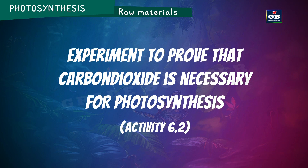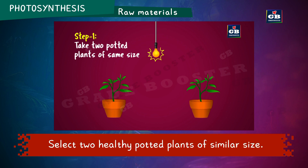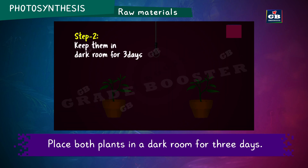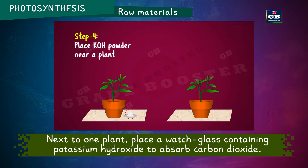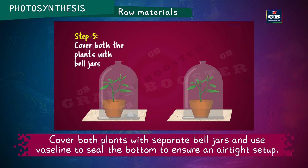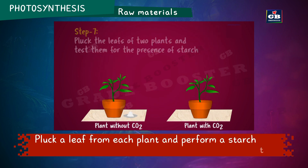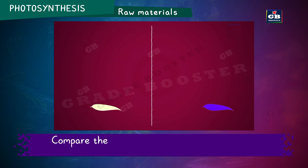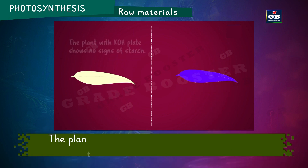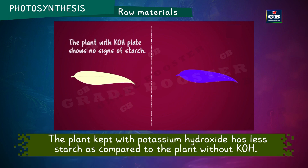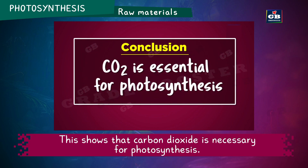Similarly, we have another activity to show that carbon dioxide is necessary for photosynthesis. Select two healthy potted plants of similar size and place both in a dark room for three days. Place a watch glass containing potassium hydroxide (to absorb carbon dioxide) next to one plant. Cover both plants with separate bell jars and seal the bottom with vaseline. Expose both plants to sunlight for about two hours, then pluck a leaf from each plant and perform a starch test. The plant kept with potassium hydroxide has very little starch compared to the other plant, showing that carbon dioxide is necessary for photosynthesis.